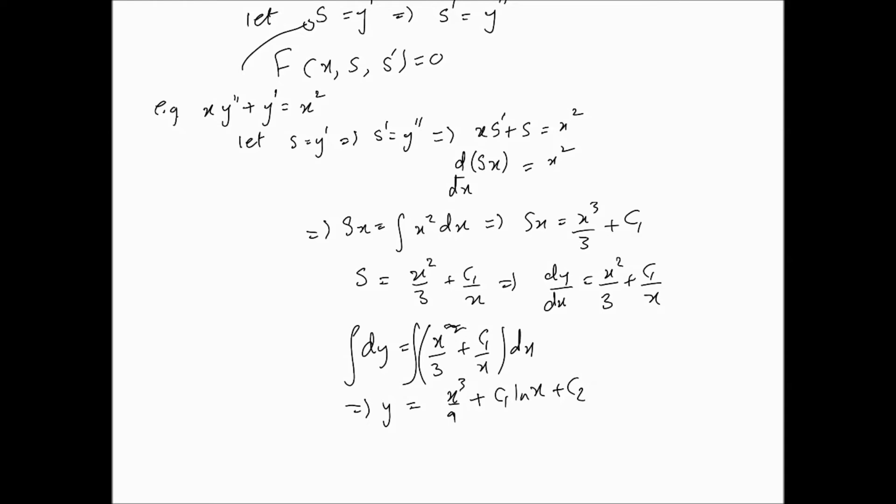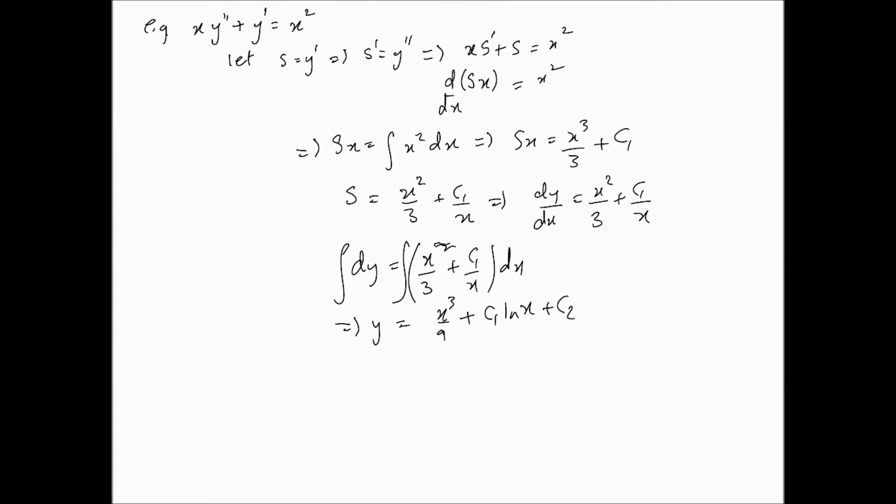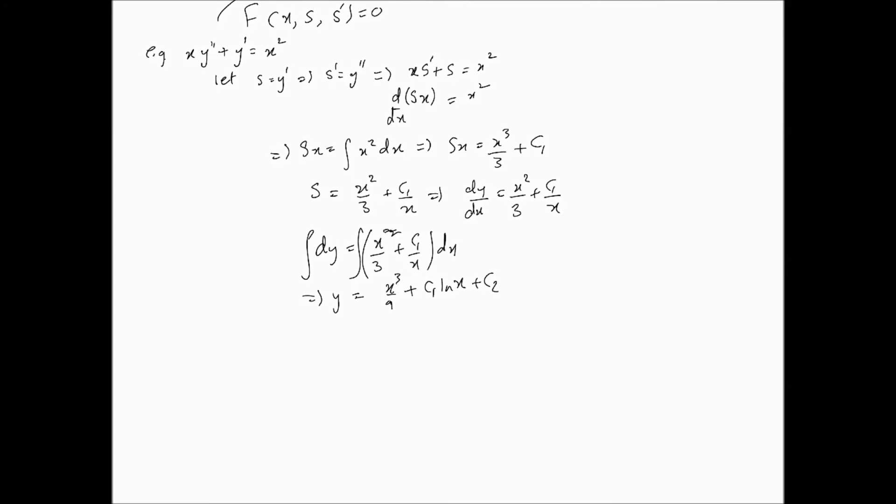And this further implies that y is simply x³/9 + C₁ln|x| + C₂. And we've solved the differential equation. So this is a typical second order differential equation would be expected to have two arbitrary constants, which we have here. And of course, given initial conditions or boundary conditions, you can further solve the problem.